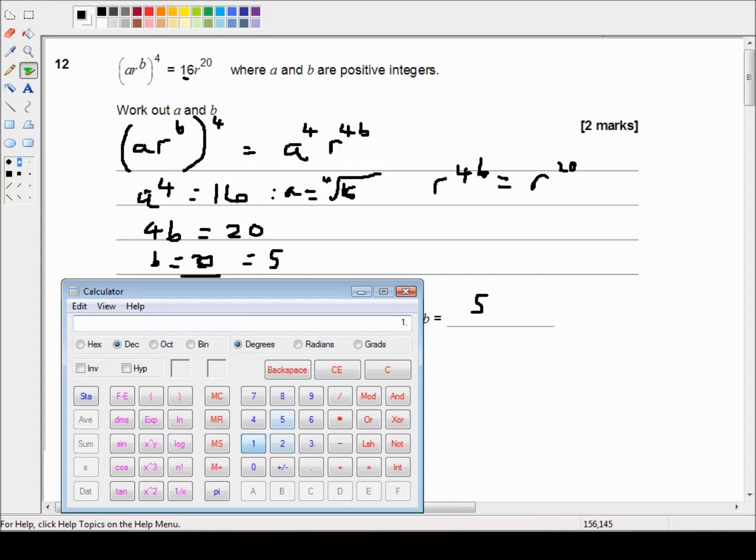So I'm just going to type 16 inverse x to the power y, 4 equals 2. So that's how I would have done it.